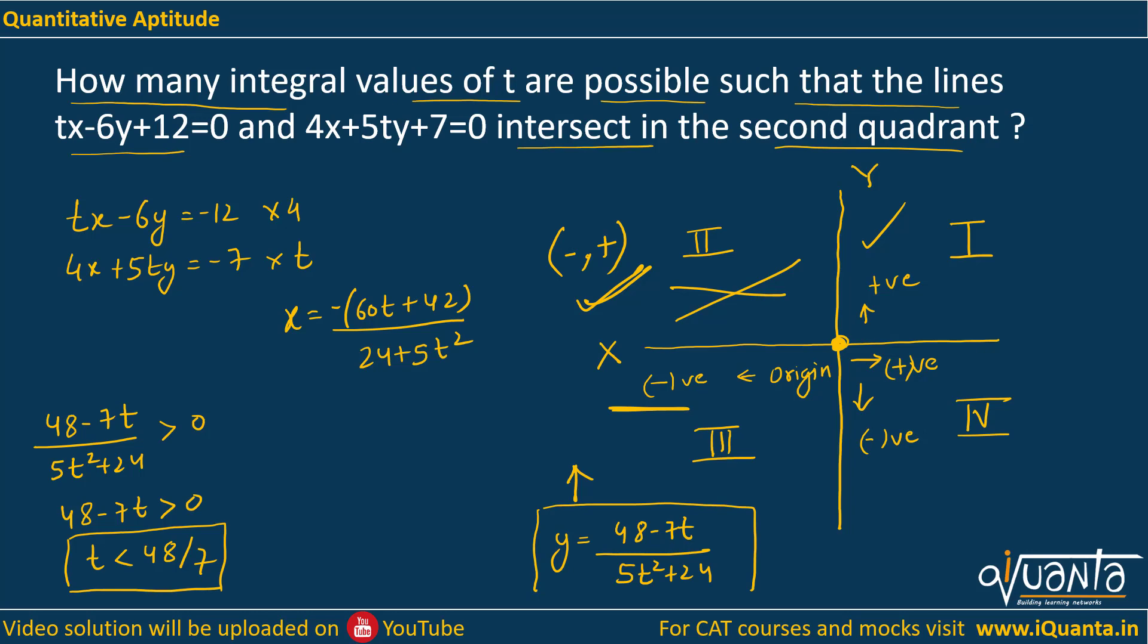Similarly, I will do it for x as well. x has to be negative, so that means less than 0. So we will be getting -(60t+42)/(24+5t²) must be less than 0.